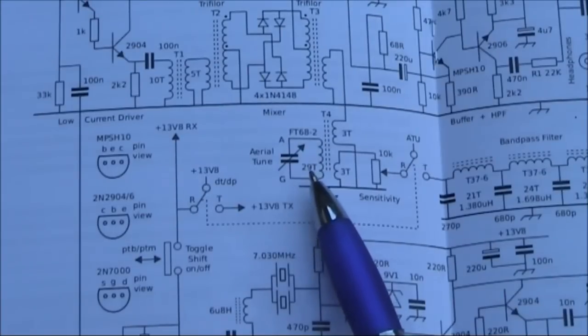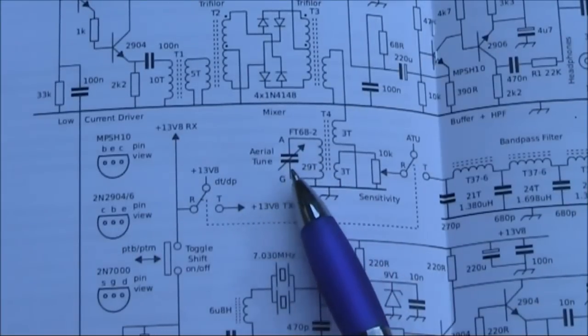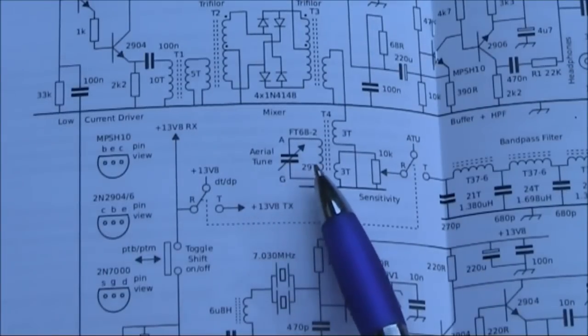Again, as we discussed before, take off some turns or reduce the capacitance for a higher frequency band, and add turns and increase capacitance for a lower frequency band.